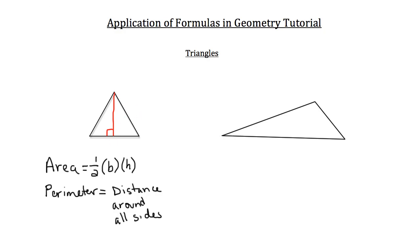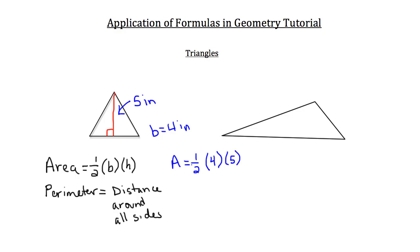If this triangle has a height of 5 inches and a base of 4 inches, you can calculate the area. Area equals one half times the base of 4 inches times the height of 5 inches. That's one half times 4 times 5, which is 20, and half of 20 is 10. So the area of this triangle is 10 inches squared.